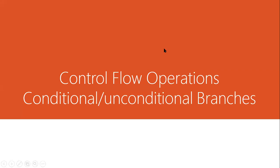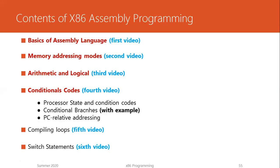This is the fourth of the six-video series on x86 assembly language. In this video and the next, you will learn how the compiler uses condition codes to implement high-level logic constructs in x86 assembly language. We will start off with condition codes that are changed as a result of executing instructions, covering both explicit and implicit settings.